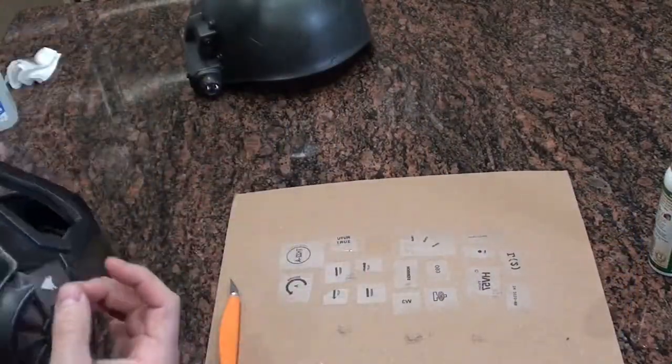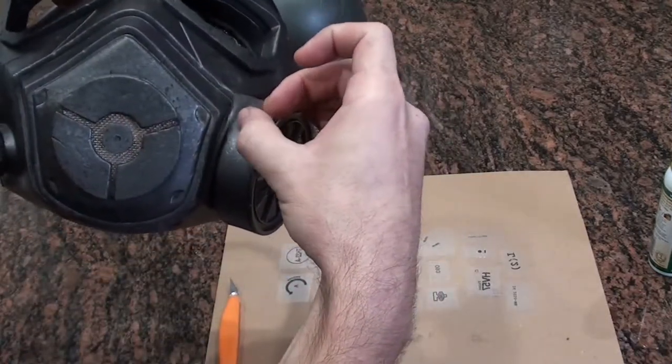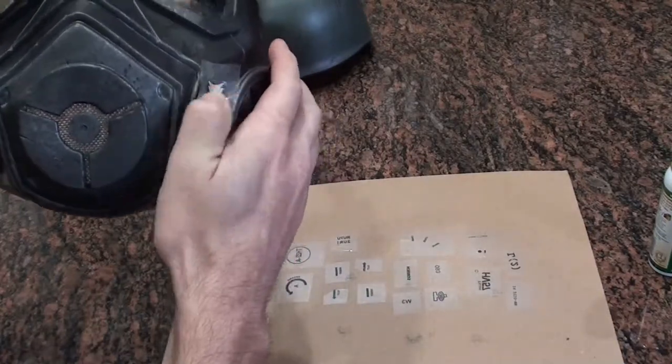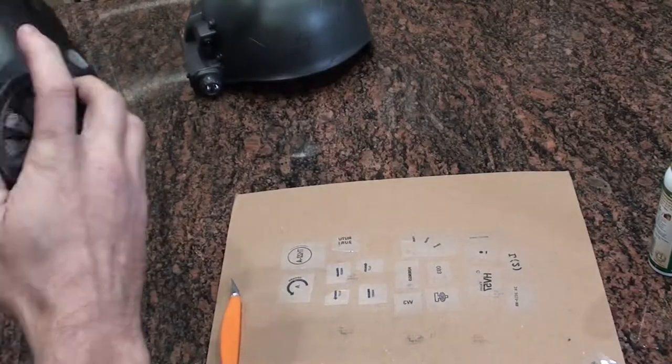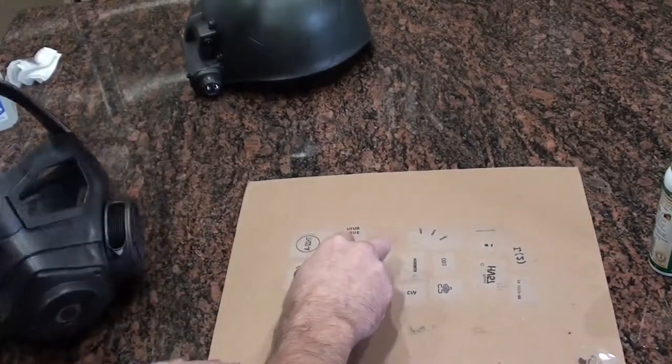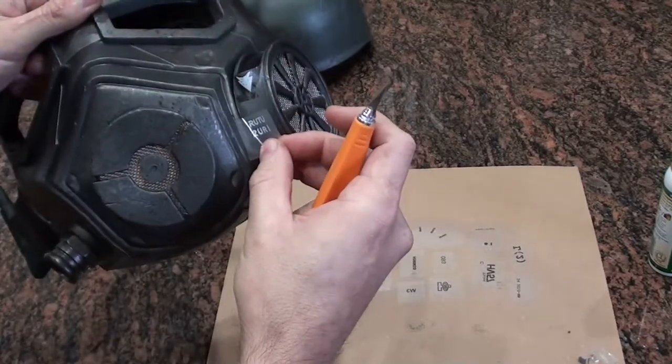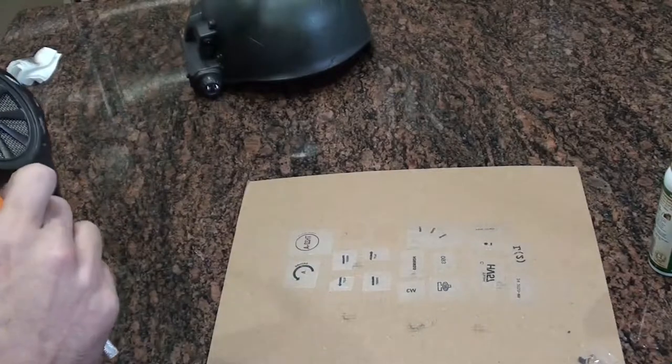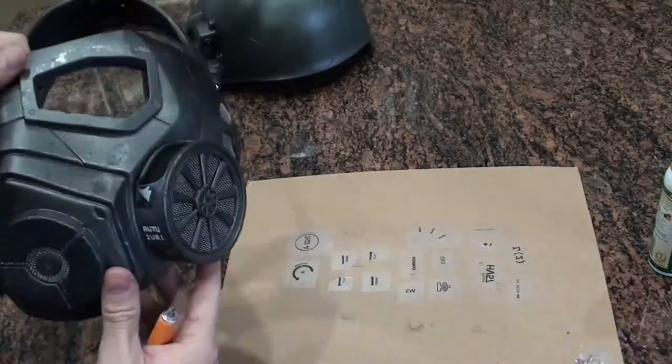So with the transfer sheet, you can actually see through it a little bit, even though it's fogged up from the spray adhesive. You're just going to hover it over the surface of where you want to apply the decal, and then when it's in position, you lay it down, and then press it down with your thumb or finger. After you've given it a good press and rub, you can pull the transfer sheet off, and the decal should stick.